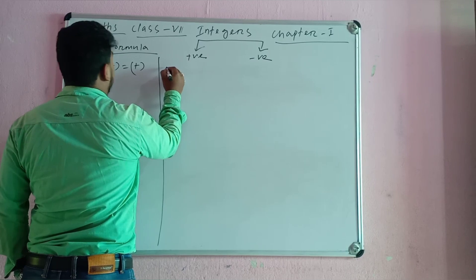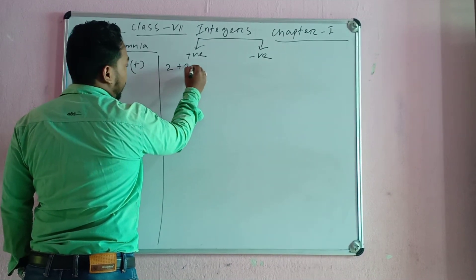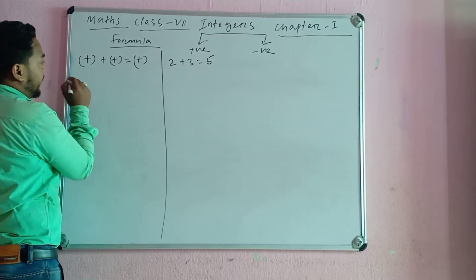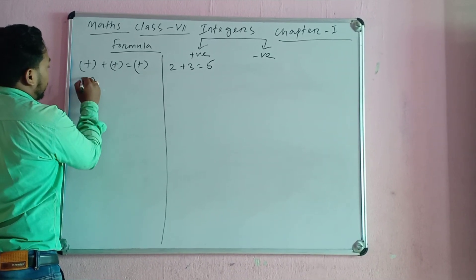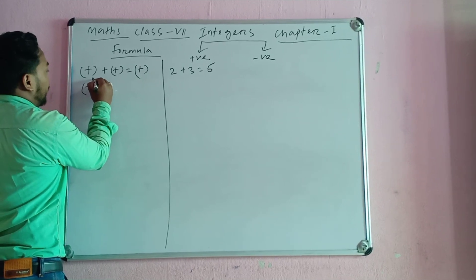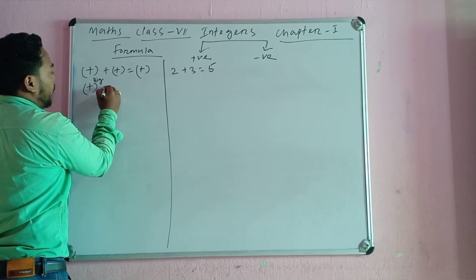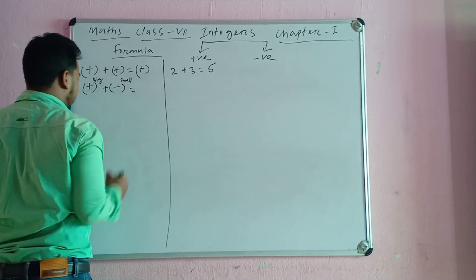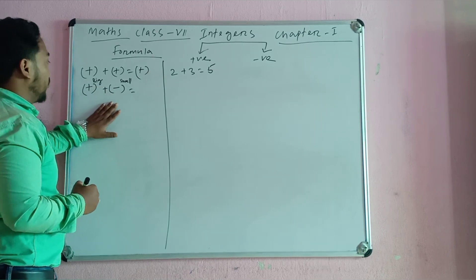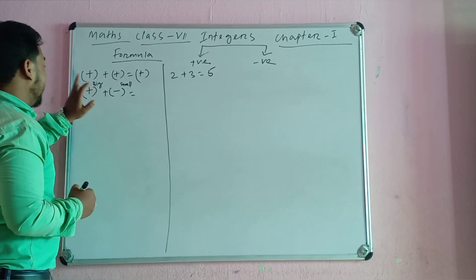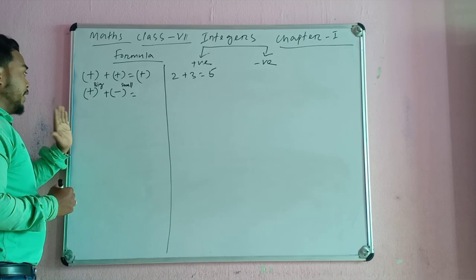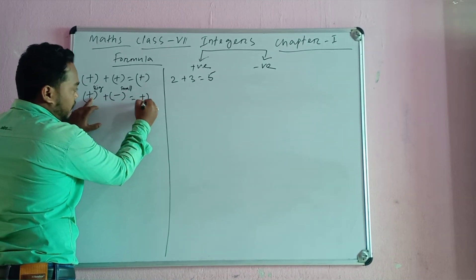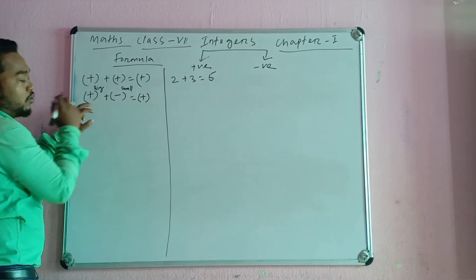This is my example. Suppose we will know that 5 will be equal to this formula. This formula will be equal to plus plus, minus minus. Look, when we have a plus and a minus, we will see which number is plus.